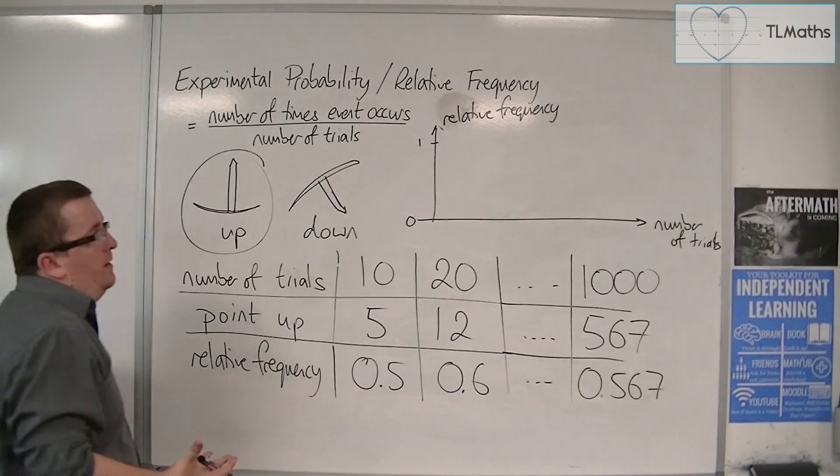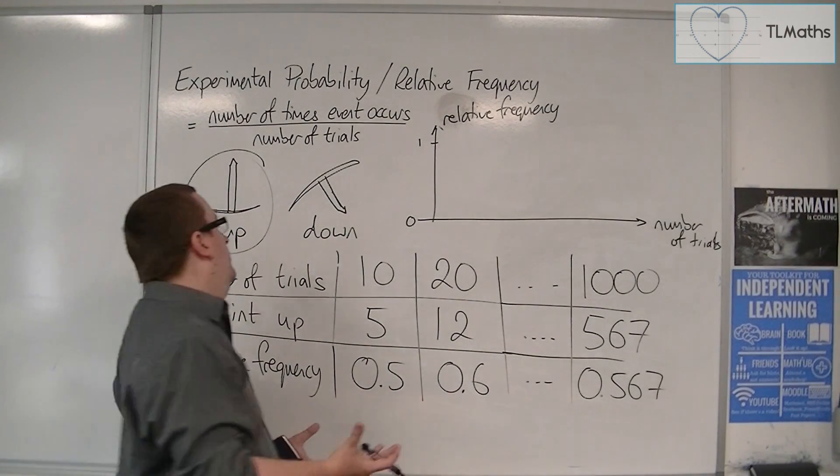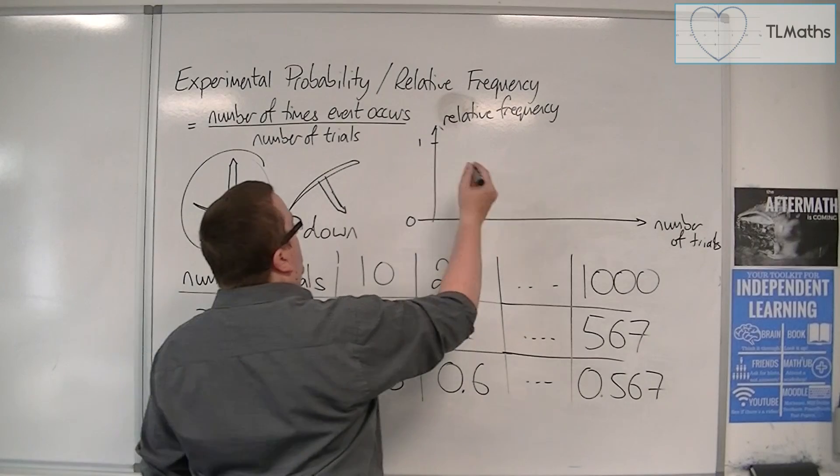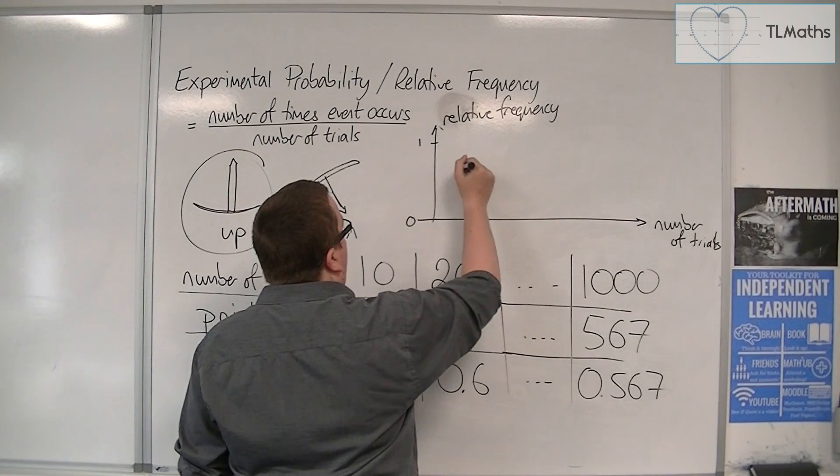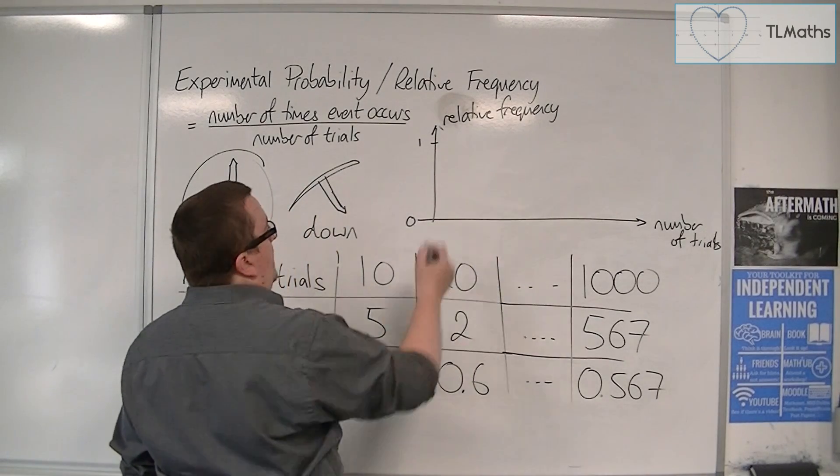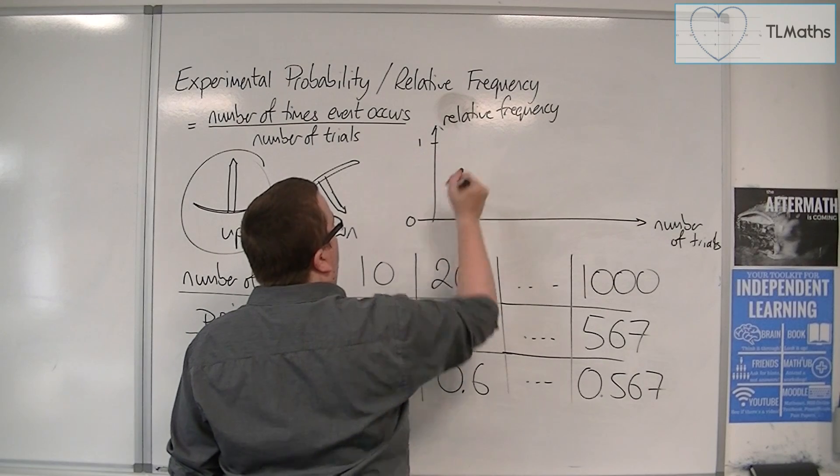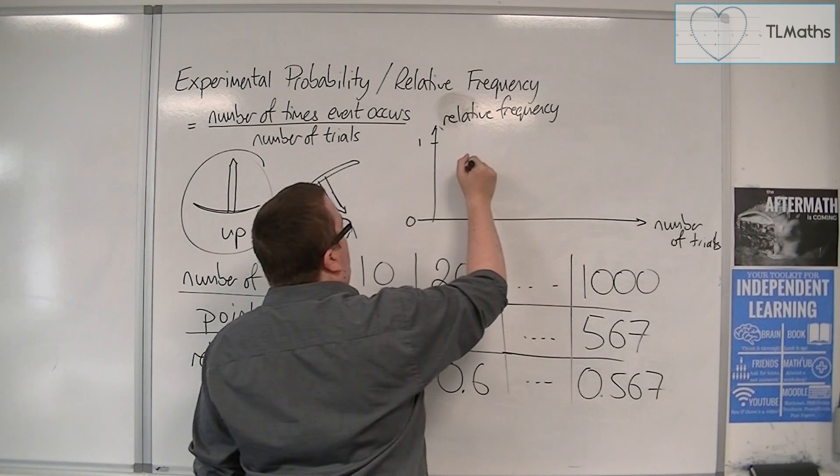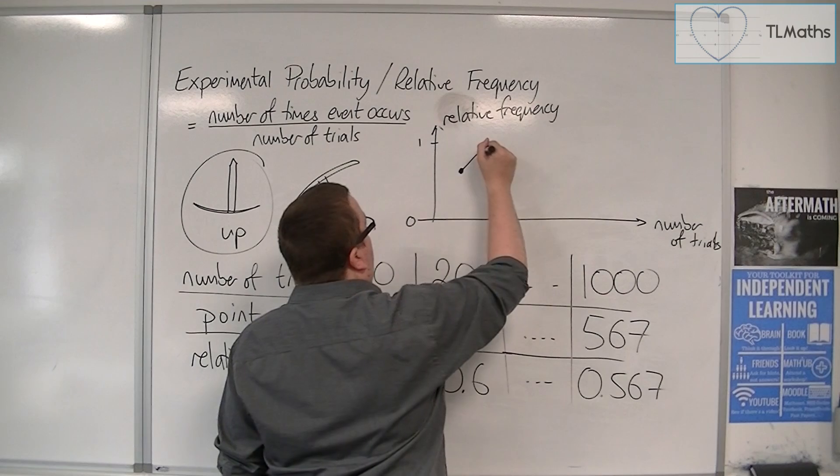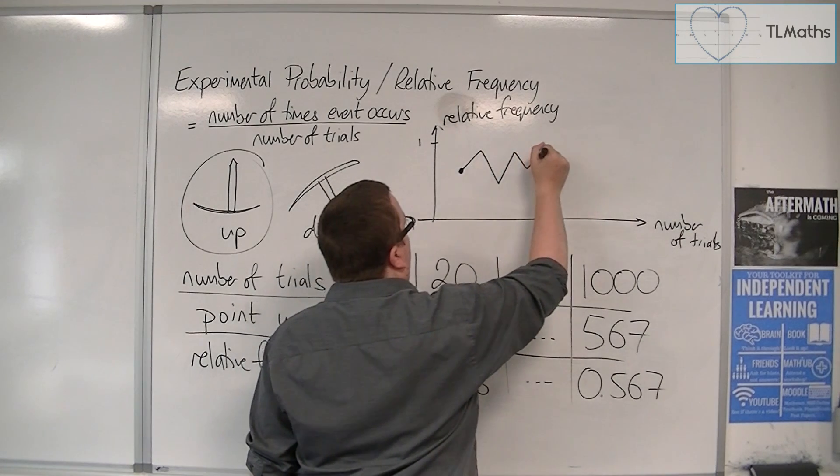And what you may see is, as you plot this, that after 10 trials, we had it at 0.5. So, it started there. And maybe what it does is, it goes in a zigzag fashion.